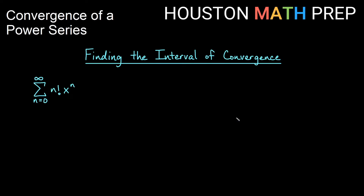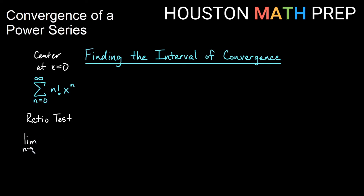Let's look at one more case: the sum from 0 to infinity of n factorial times x to the n. I have a factorial again, so the ratio test is good here. The center is at x equals 0, since there's no (x minus something) in parentheses. The ratio test gives us the limit as n approaches infinity of the absolute value of the (n plus 1) term over the nth term, less than 1.